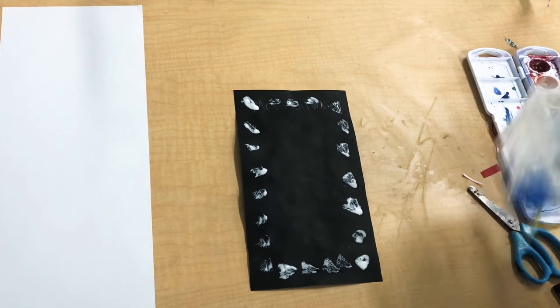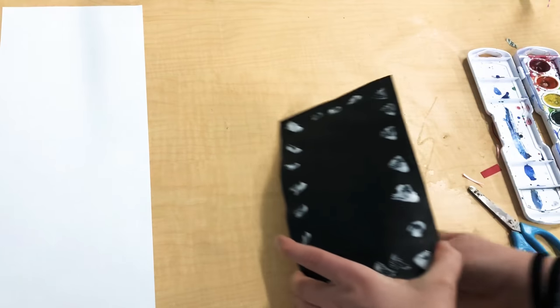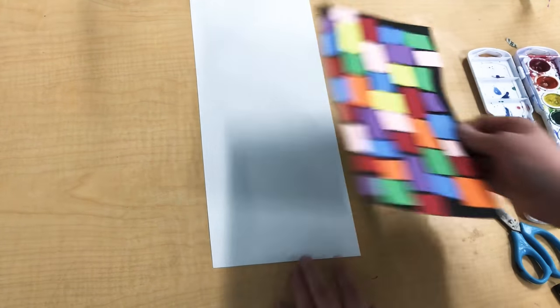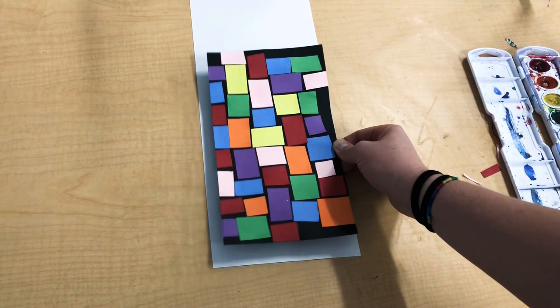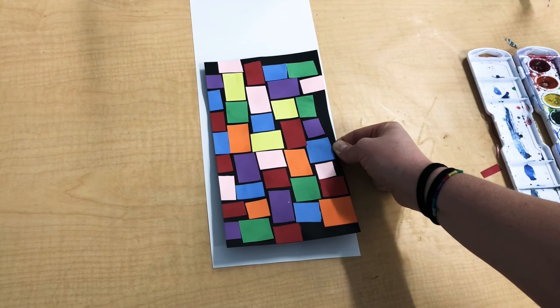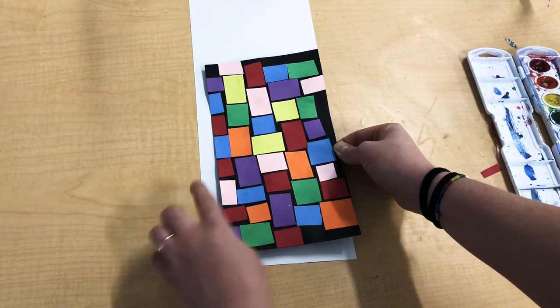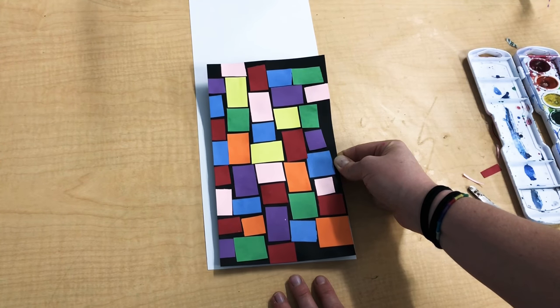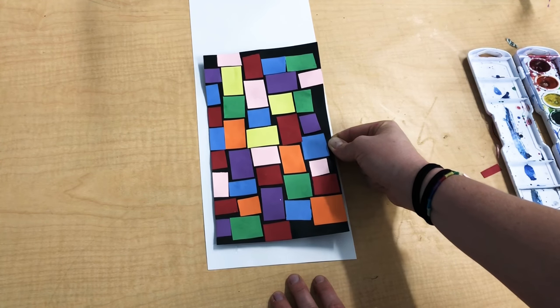Then I'm going to get ready to glue it down. So I'm going to carefully pick it up, and I'm going to put it at the bottom of my paper. And I'm going to leave some white space on both sides. I'm not going to put it all the way at the bottom. I want to leave a little bit of space.